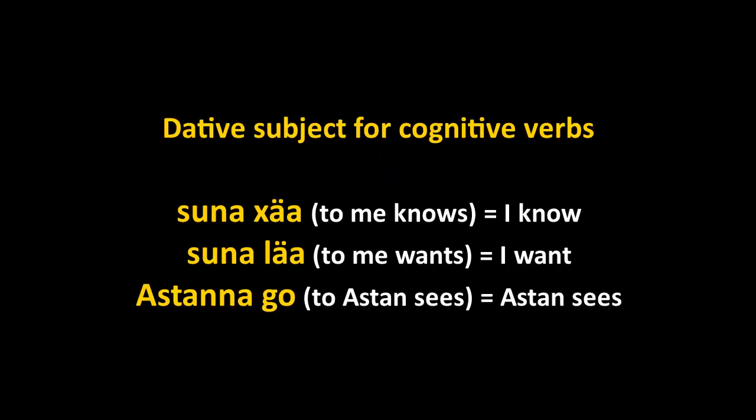The dative case in Chechen is used to mark the subject of cognitive verbs — verbs that imply something happening inside your mental system, like to know, to want, to feel, to think, to desire. So suna ché: suna is the dative of 'me,' meaning 'to me, knows.' The verb itself in Chechen doesn't change for person — there is no first, second, or third person form.